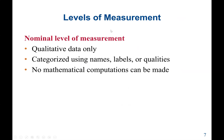Next, we discuss the levels of measurements. The first is the nominal level of measurement. Nominal level is only qualitative data — names, labels, or qualities. There are no mathematical computations or arithmetic operations that can be performed. Examples of nominal level data include eye color, a person's name, or a city name.